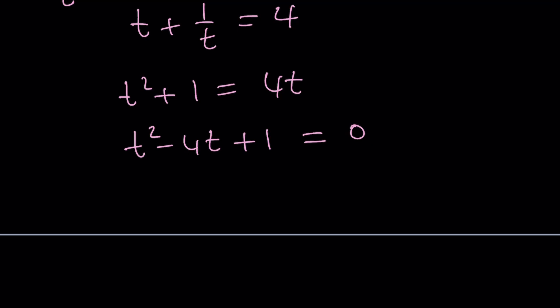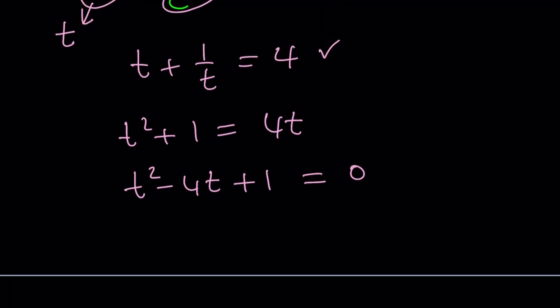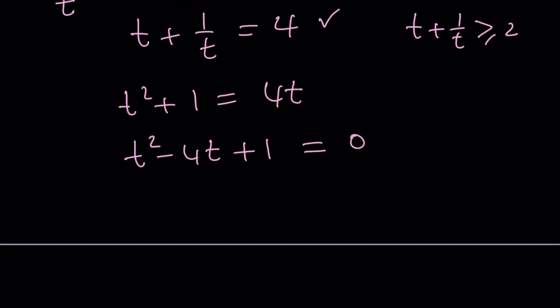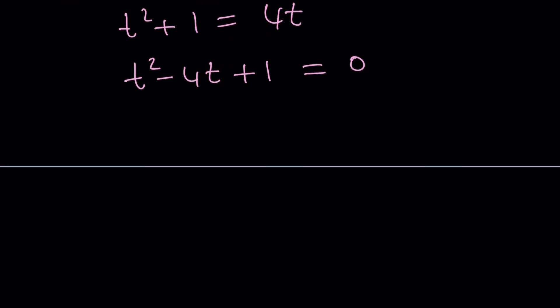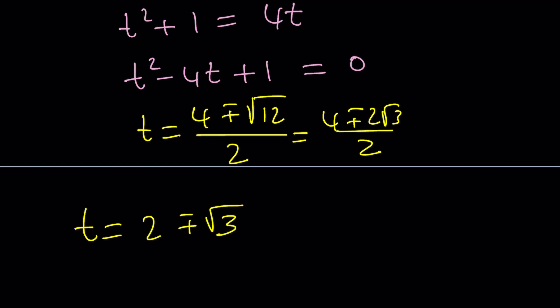Do you think t is going to have real values? Yes, because the minimum value for t plus one over t is two. And this is greater than two. Great. That shows us automatically because what happens is this is greater than or equal to two when t is positive. If t is negative, then it's going to be on the opposite side of things. So let me solve this equation. Quadratic formula is probably the quickest one: negative b plus minus the square root of b squared, which is 16 minus four. That's going to be a 12 divided by two. As you can see, t is real. Four plus minus two root three divided by two. And t from here becomes two plus minus root three. Awesome.